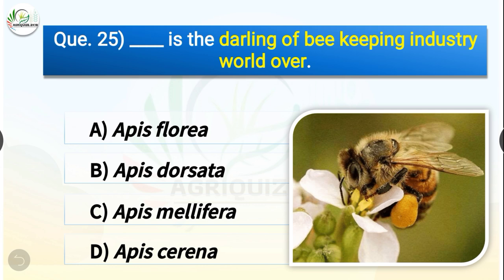Question number twenty-five: Dash is the darling of the beekeeping industry world over. The options are Apis florea, Apis dorsata, Apis mellifera, or Apis cerana. The correct answer is option C — Apis mellifera. Apis mellifera is the darling of the beekeeping industry world over.